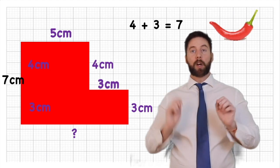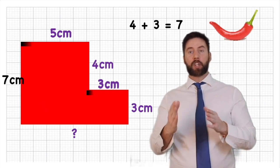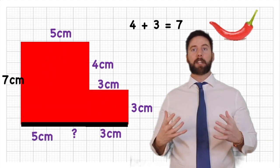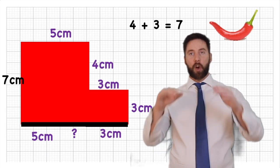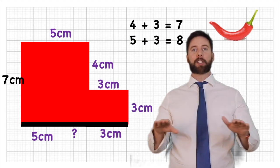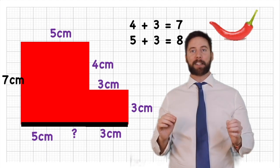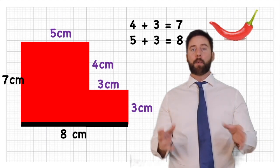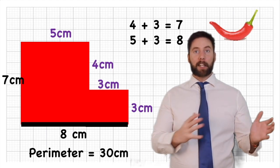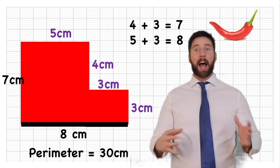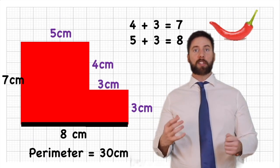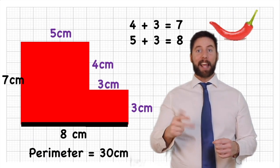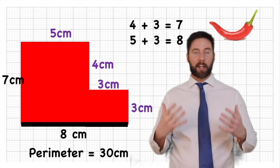Now for the horizontal sides: I've got 5 and 3. If I bring them down to my missing number, that missing horizontal measurement is 5 + 3 = 8 centimetres. So this red chilli challenge brings together several skills: handling mixed numbers, finding missing measurements, understanding what perimeter means, and as a bonus — using multiplication instead of repeated addition for regular shapes.